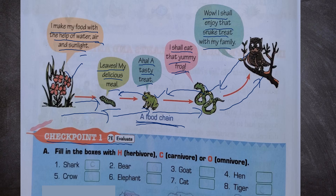Now let us see checkpoint 1. Fill in the blanks with H for herbivore, C for carnivore, or O for omnivore. Shark is a carnivore. Crow is omnivore. Bear is omnivore. Elephant is herbivore. Goat is also herbivore. Cat is carnivore. Hen is omnivore. And tiger is carnivore.